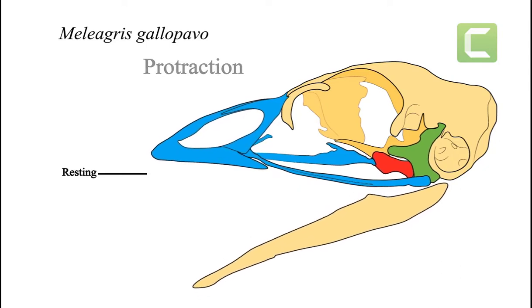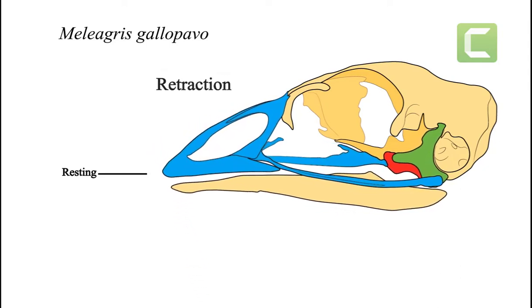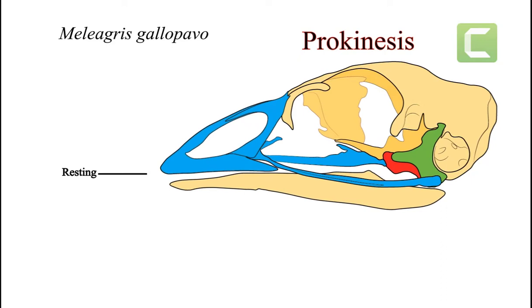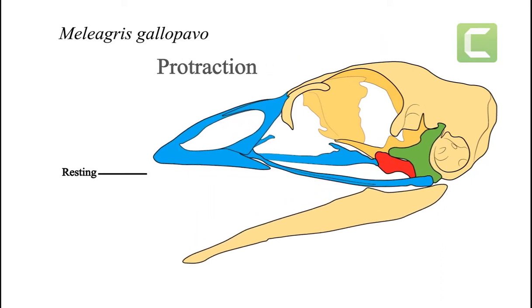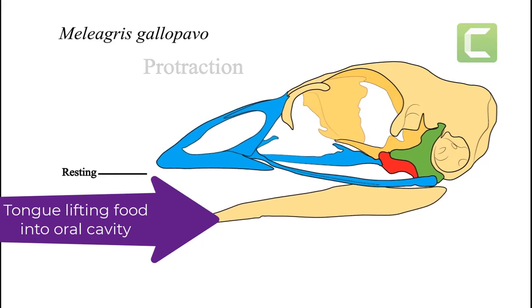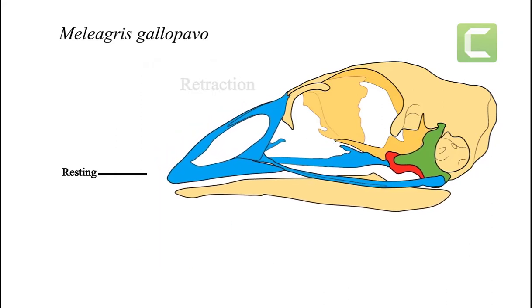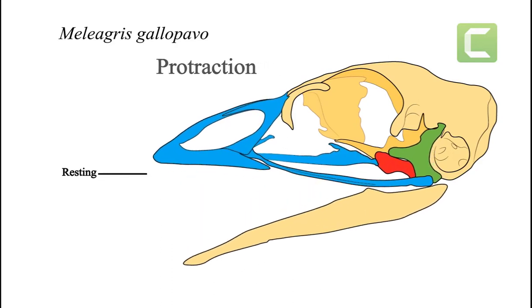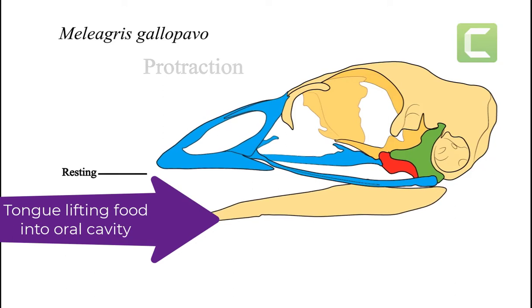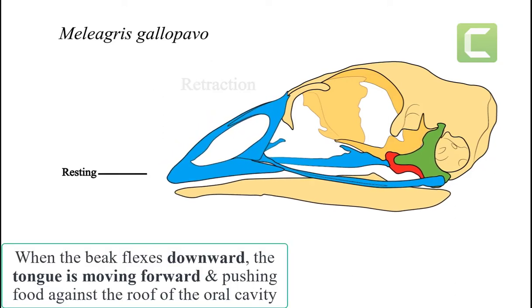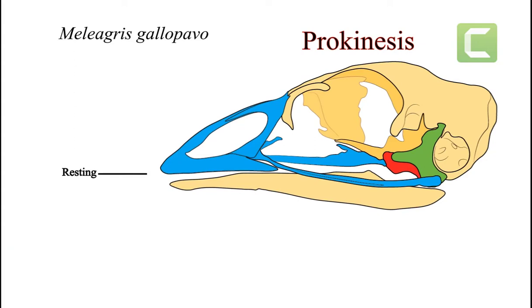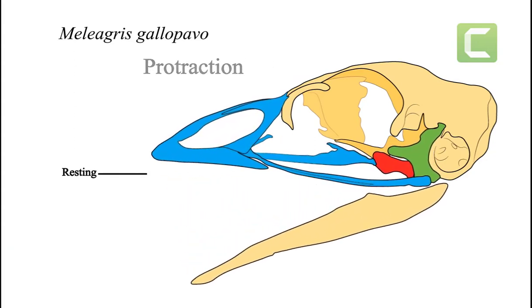The tongue is not shown here, but as the jaws open, the tongue moves food into the oral cavity. And when the jaws close and the beak flexes downward, the tongue is moving forward and pressing food against the roof of the oral cavity. The tongue lifts the food into the oral cavity and then presses it against the downward flexing palate, part of the upper beak unit.